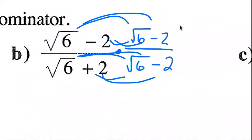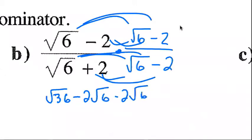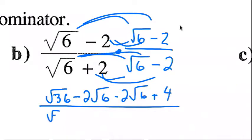So square root of 6 times square root of 6 is square root 36. This is on the top. Minus 2 square root 6 minus 2 square root 6 plus 4. All over square root 36 minus 2 root 6 plus 2 root 6 minus 4.